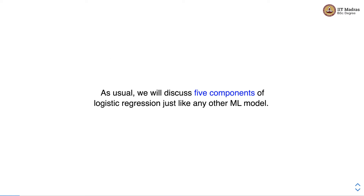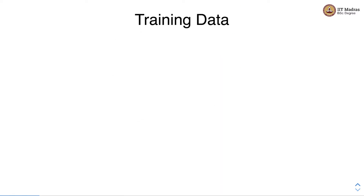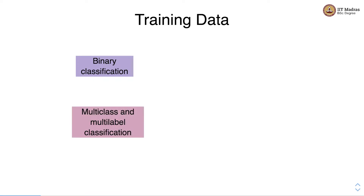As usual, we'll discuss five components of logistic regression, just like any other machine learning model. The first component is the training data. We'll look at training data for logistic regression in two settings: one is binary classification, and the second is multi-class and multi-label classification. In binary classification, our training data consists of a feature matrix and a label vector. Each individual example has a feature vector and a label from some discrete set, and there are n such examples.